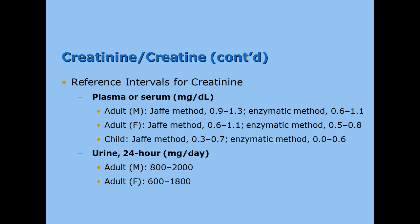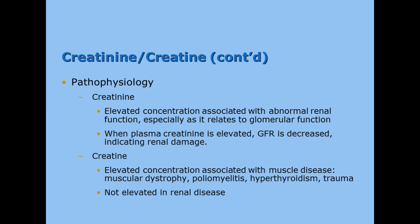Normal creatinine is 0.9 to 1.3 mg/dL for males and 0.6 to 1.1 mg/dL for females. It is fairly dependent on muscle mass — men have more muscle so their creatinines are a little higher, females a little lower. We usually see creatinine increased with abnormal renal function; when plasma creatinine is elevated, the glomerular filtration rate is decreased, indicating renal damage.